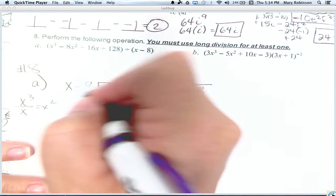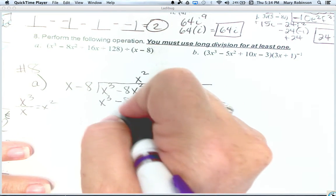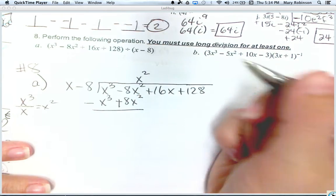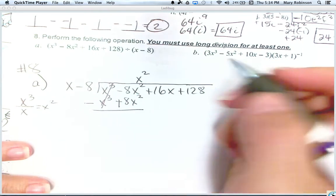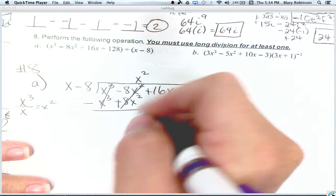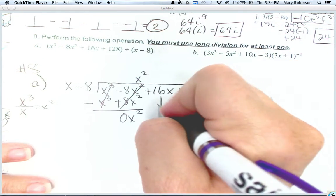Then we distribute. x squared times x is x cubed. x squared times negative 8 is negative 8x squared. Draw your line. Change your signs. Negative 8x squared plus 8x squared cancels giving you 0x squared. It might seem odd, but please don't forget that step. Don't think you messed up.